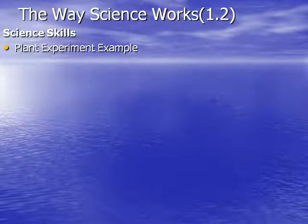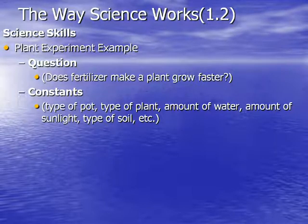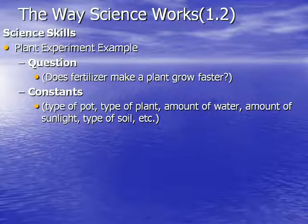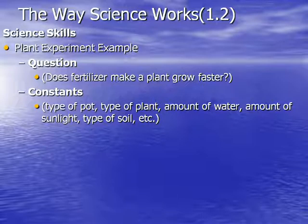Let's talk about the different parts of an experiment using an example. We want to know if fertilizer really helps a plant grow faster and taller. Constants are things that stay the same throughout the entire experiment — same type of pot, same type of plant, same amount of water, same amount of sunlight, same type of soil. We don't want different conditions because that would make the experiment inconclusive. The independent variable — the object being tested — is the fertilizer. The dependent variable is how fast, or the time it takes for the plant to grow.